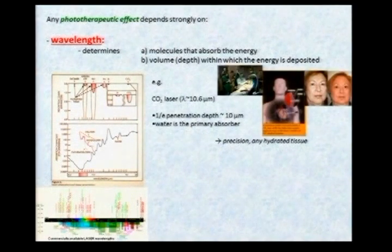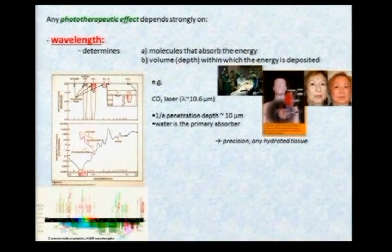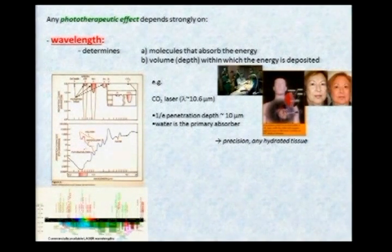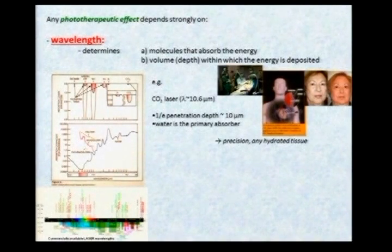This very much determines what treatments can be given. For example, a CO2 laser at 10 microns is very heavily absorbed by water, and the 1/e penetration depth is about 10 microns. So you can remove tissue with great precision in any hydrated tissue. This is used as a general surgical tool, in skin remodeling, and at one time for myocardial reperfusion — where you could punch holes in the heart with a CO2 laser to stimulate angiogenesis and help the heart recover.